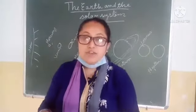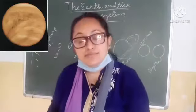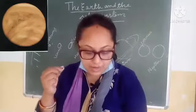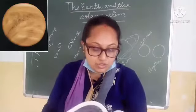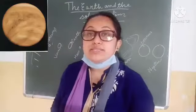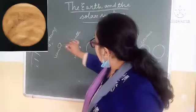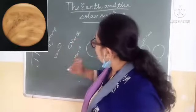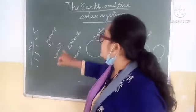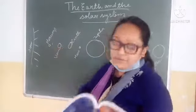Second is Venus. Venus is named after the Roman god of love and beauty. Venus is very beautiful. It is also known as Earth's twin because the size of Venus is nearly the same as the size of the Earth, and that is why it is called Earth's twin.